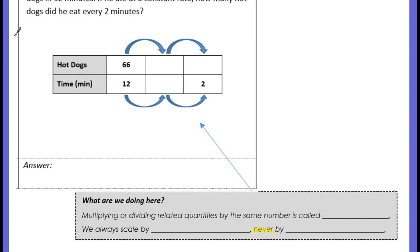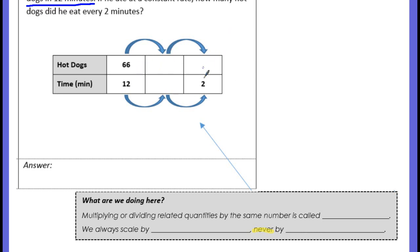Joey Chestnut won a hot dog eating contest by eating 66 hot dogs in 12 minutes. If he ate at a constant rate, how many hot dogs did he eat every two minutes? The rate is 66 hot dogs in 12 minutes. Our ratio table has labels for hot dogs and time in minutes. We have 66 hot dogs in 12 minutes, but we want to know how many he eats in every two minutes — we need to make the rate smaller.